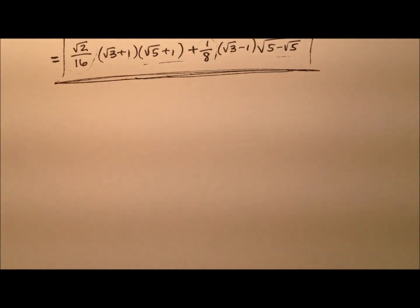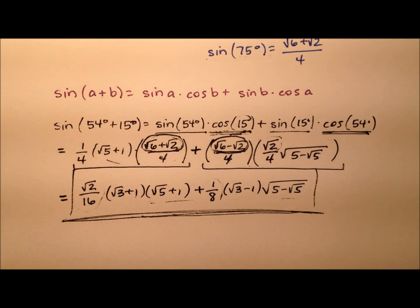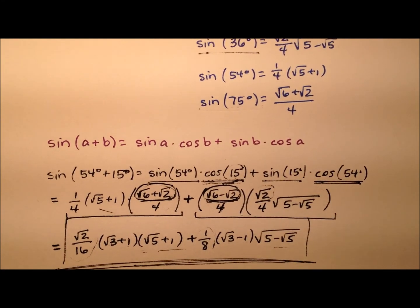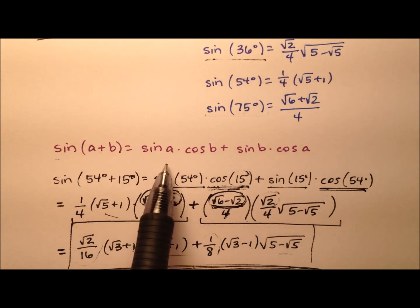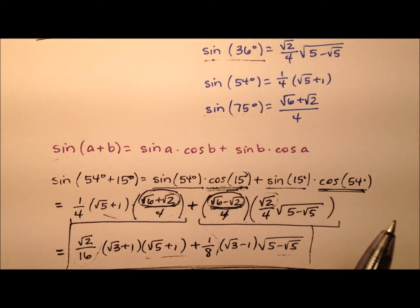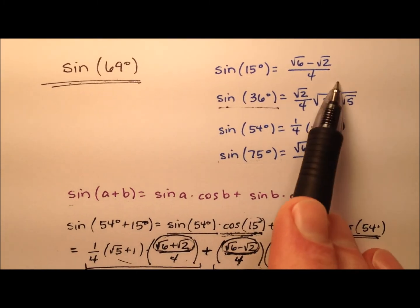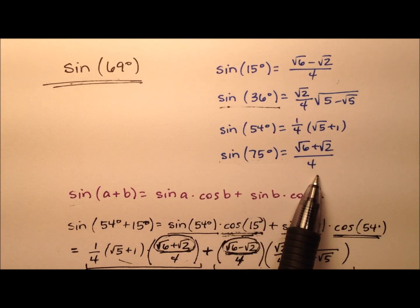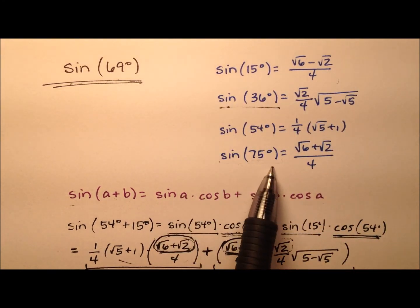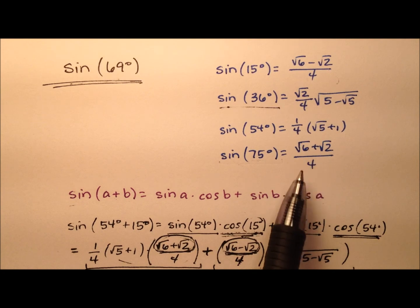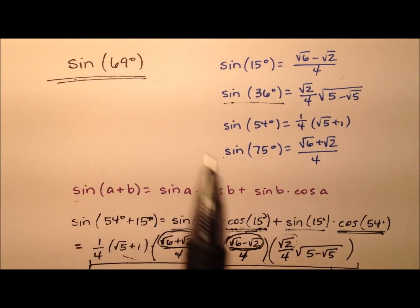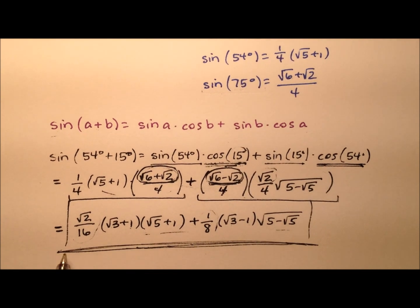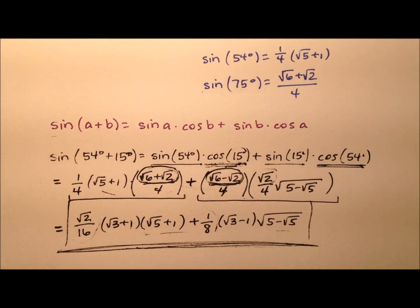So what we've seen here: we used the sum identity for sine, applied the expansion, and used these four values — found from scratch in previous videos linked in the description — as helper values. Our sine of 69 degrees has this exact value. See you next time.